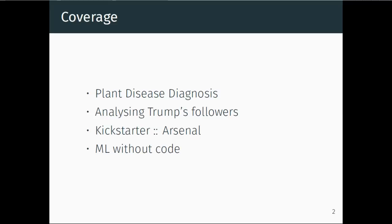I'm going to talk about four things. First is plant disease diagnosis. Second is a great article on FiveThirtyEight about analyzing Trump's followers. Third is Kickstarter Arsenal. And fourth is a very interesting effort by Google called ML without code. This is a general backgrounder for people to see what is interesting in AI and ML in action — not a coding session.